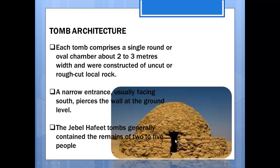Archaeologists also found that the tombs in the Jebel Hafeet area contain the remains of maybe 2 to 5 people — the bodies of 2 to 5 people. So these tombs were built for a limited number of people; very few people were buried in a single tomb.